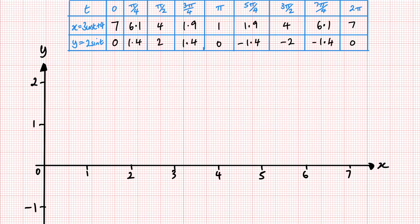Now all I need to do now is plot the points and I want to plot them in order. So my first one is 7 across, 0 up, so you can see that that is right on the line here. What I'm going to do is I'm just going to put a little dot for each one. My next is 6.1 and 1.4.